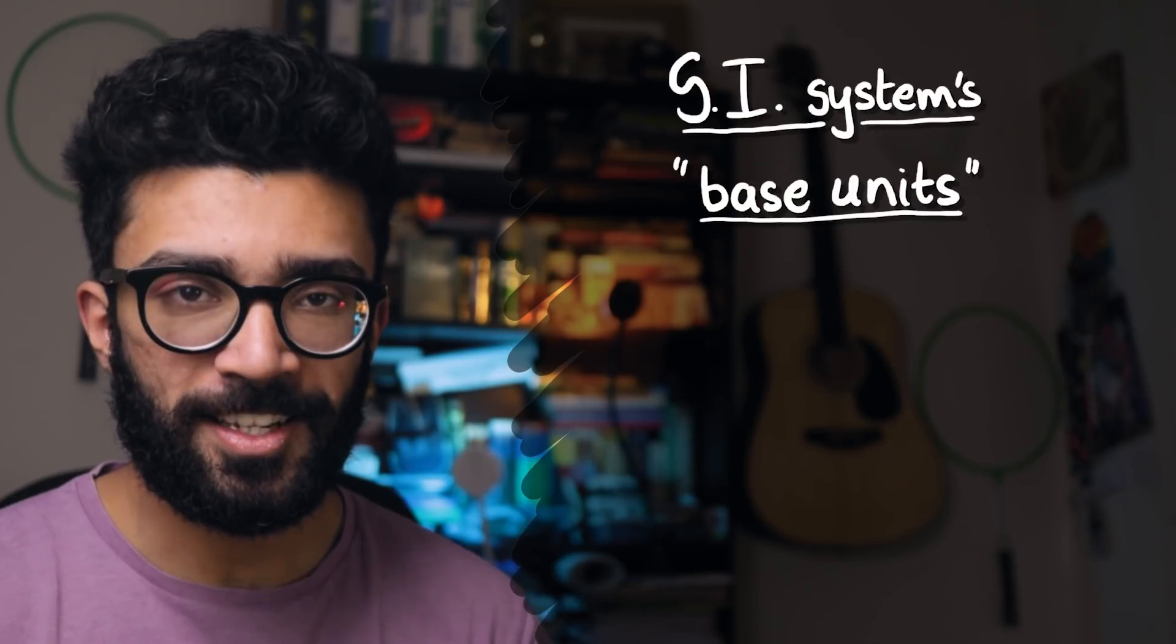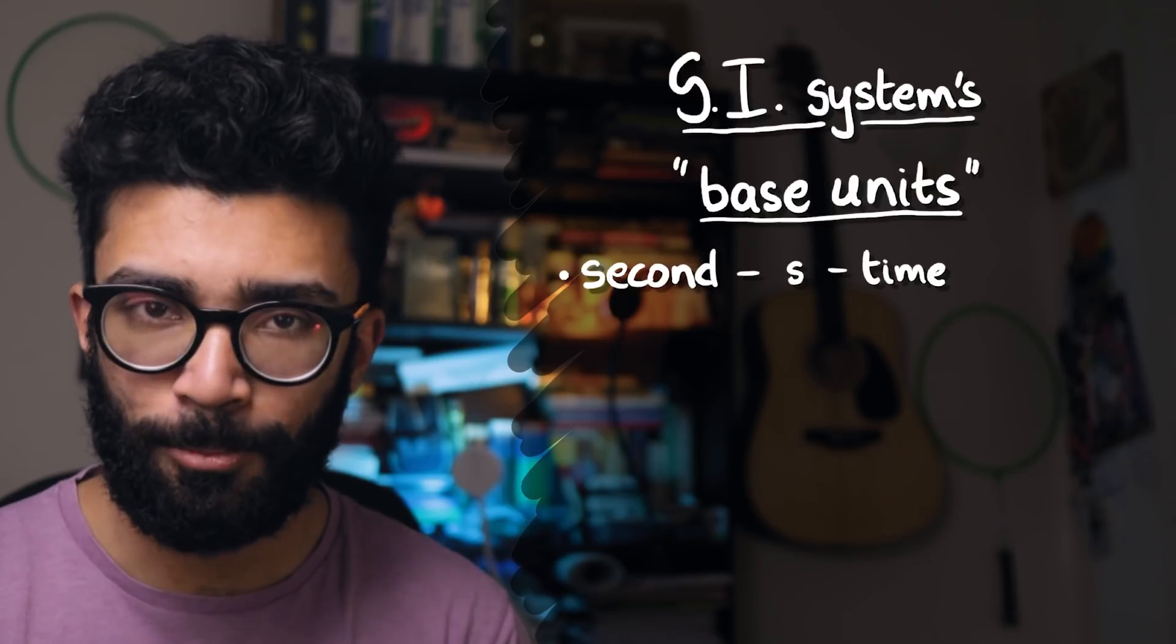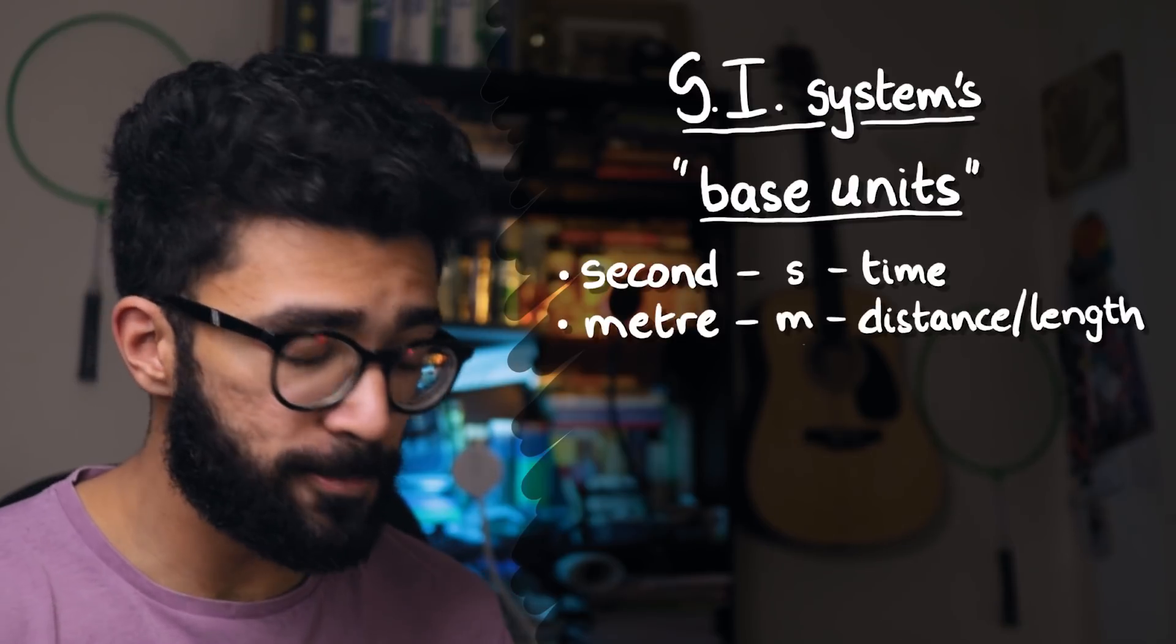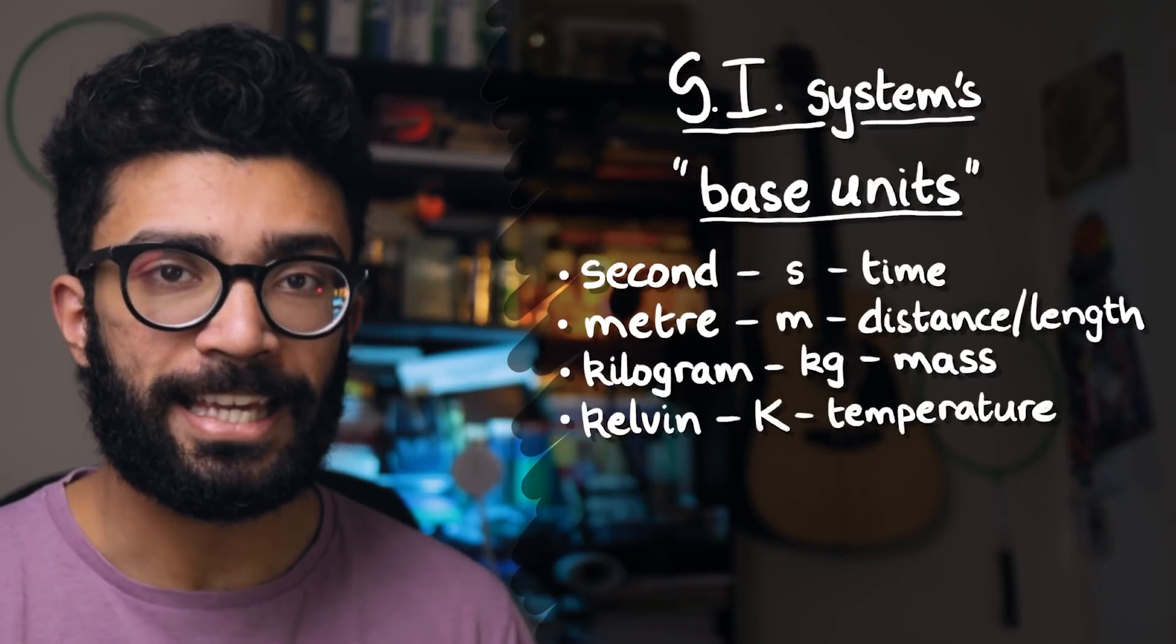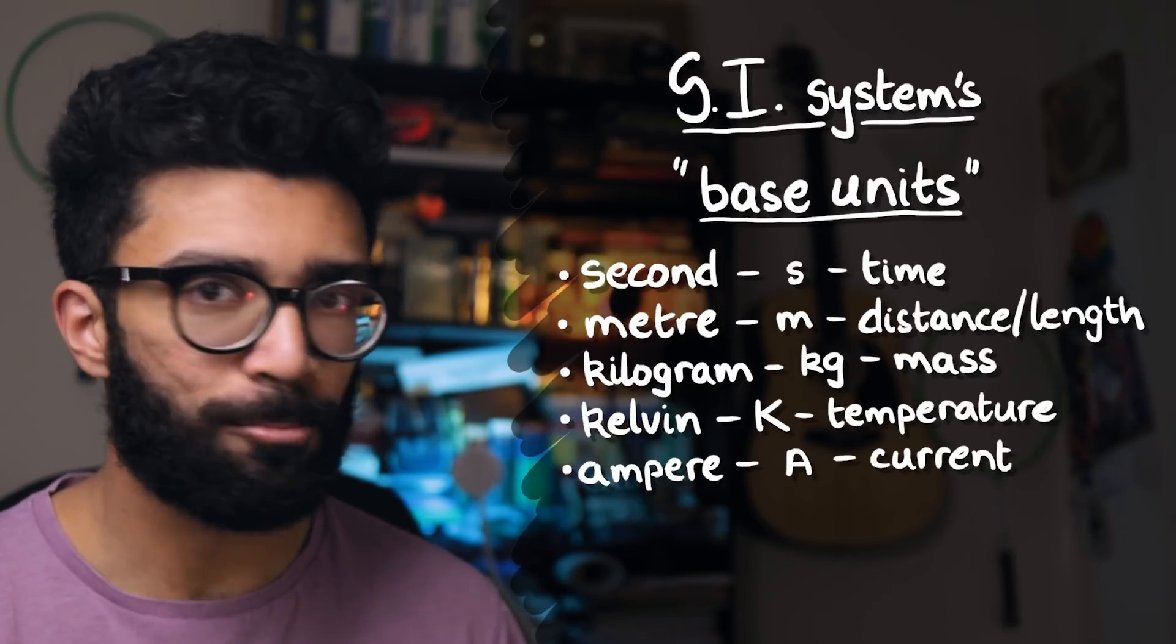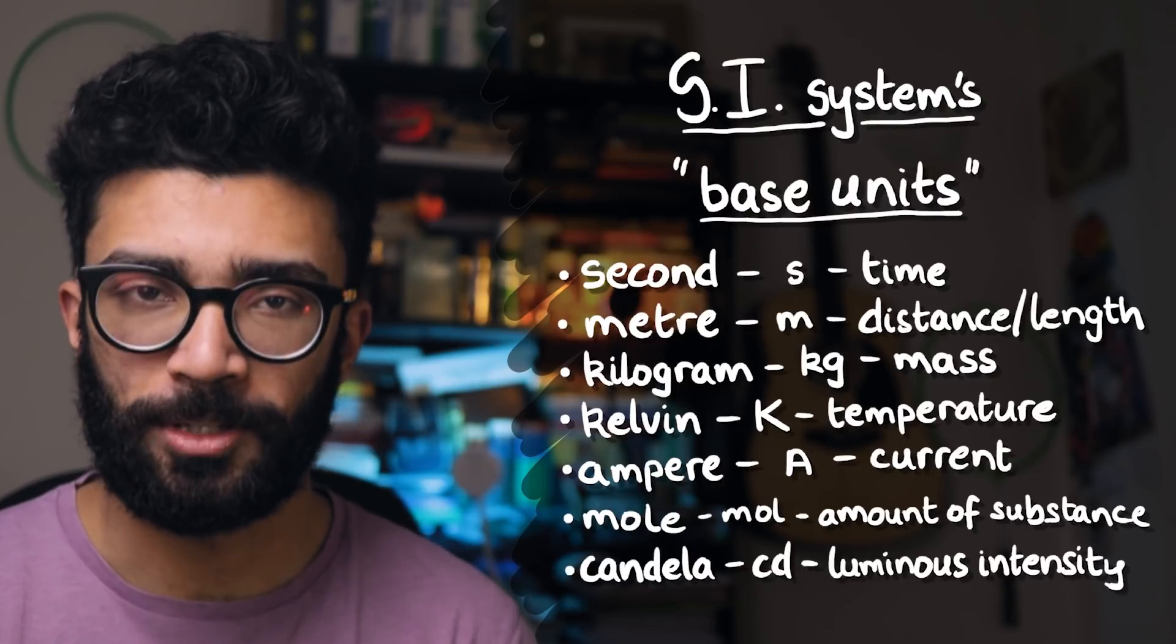Like I said, the SI system consists of seven so-called base units. The second, which measures time, the meter, which measures distance, the kilogram, which measures mass, the kelvin, which measures temperature, the amp, which measures current, the mol, which measures amount of substance, and the candela, which measures luminous intensity.